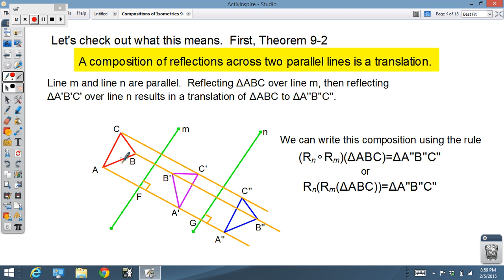Obviously you can look at the pictures. The first reflection over M, well, the red figure is reflected into the purple figure. Then the second reflection over line N, the purple figure is reflected into the blue figure. Notice that we have a perfect translation now from the red to the blue. So that's how it works.